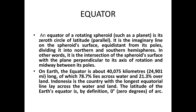On Earth, the equator is about 40,075 km long, of which 78.7% lies across water and 21.3% over land. Indonesia is the country having the longest equatorial line, which lays across both water and land. The latitude of the Earth's equator is by definition zero degrees of arc.